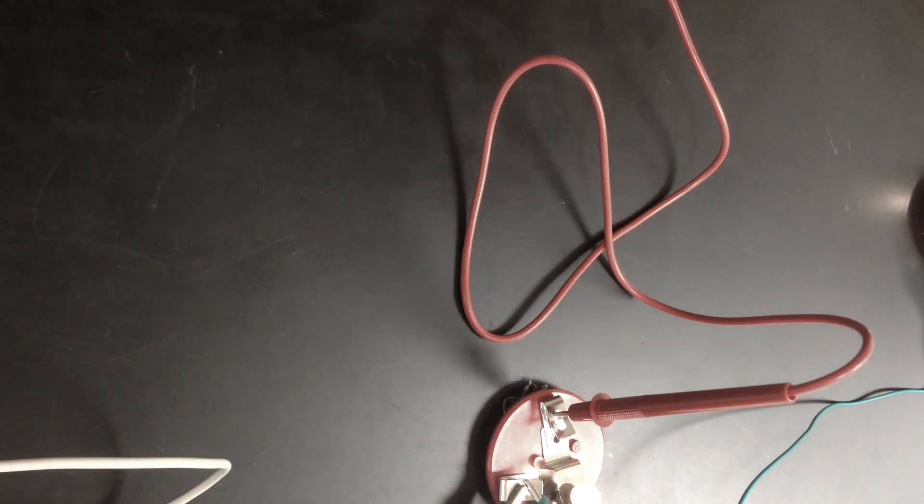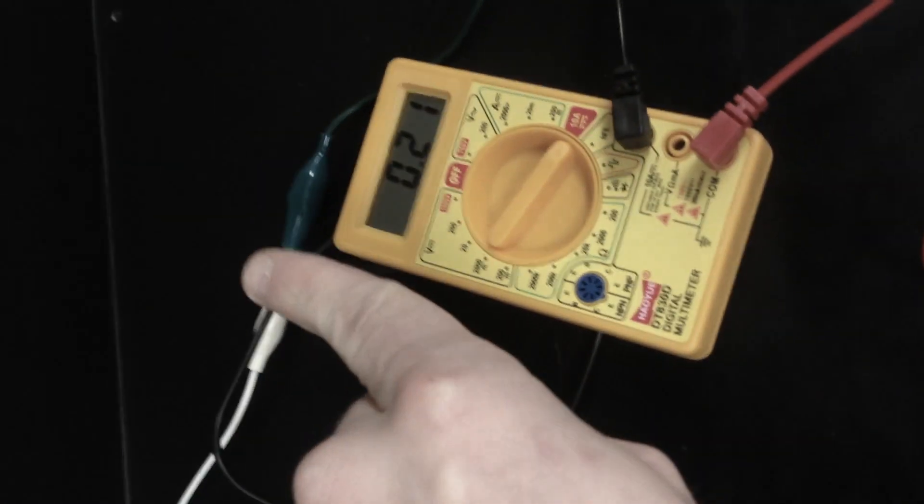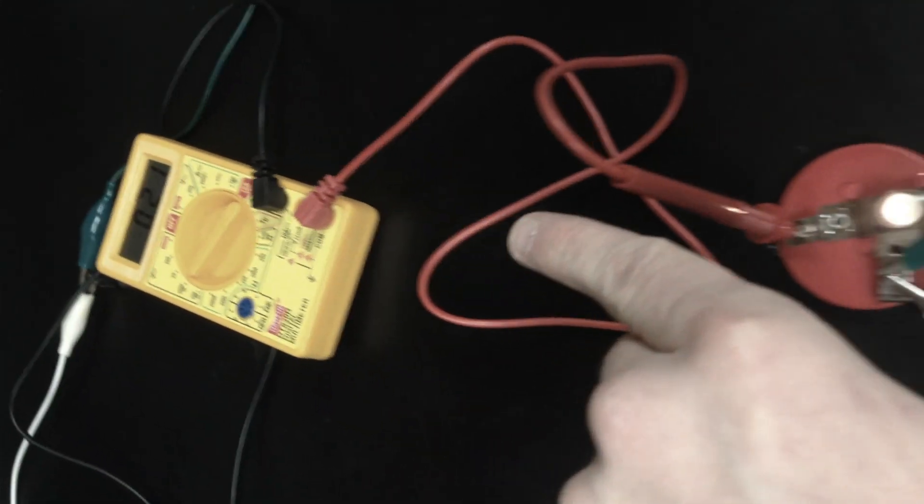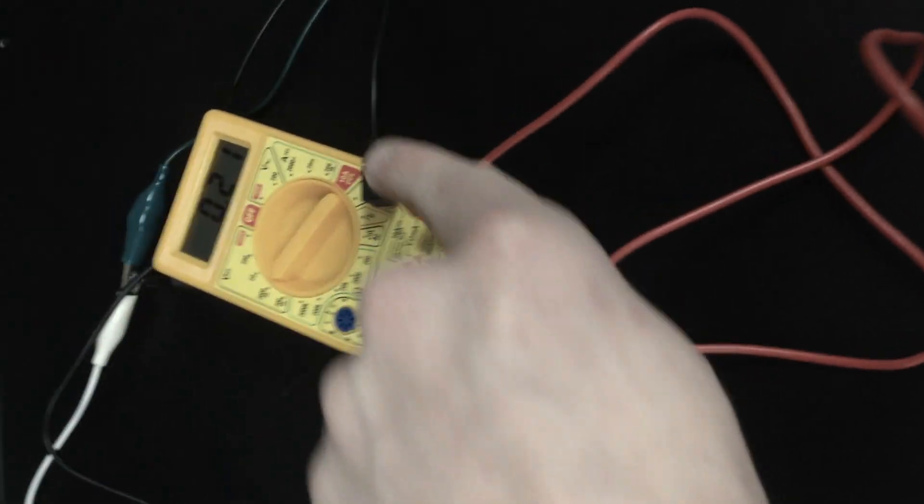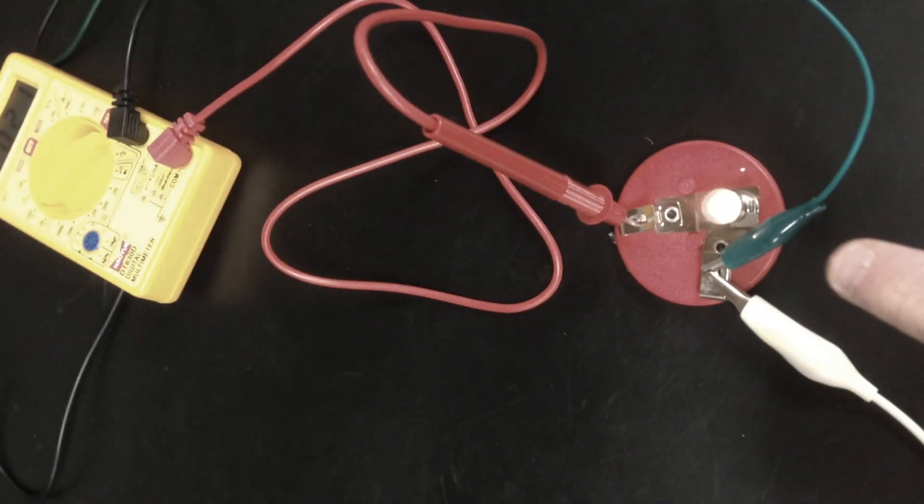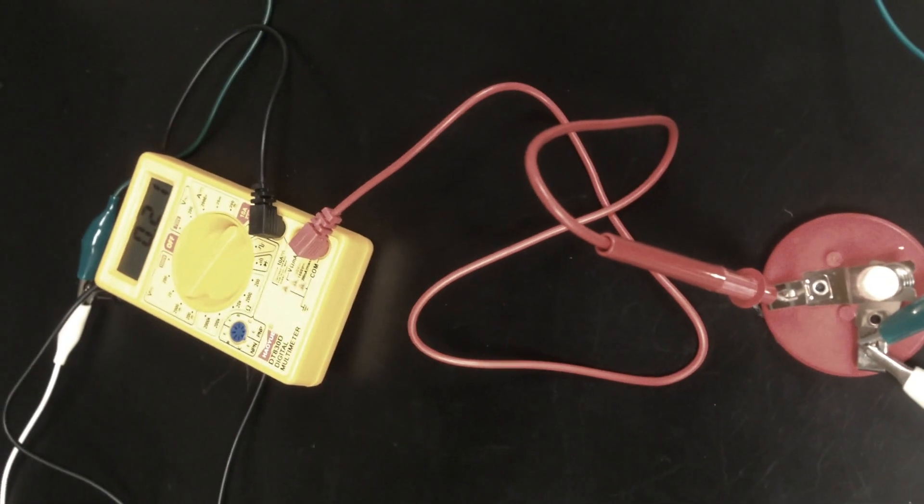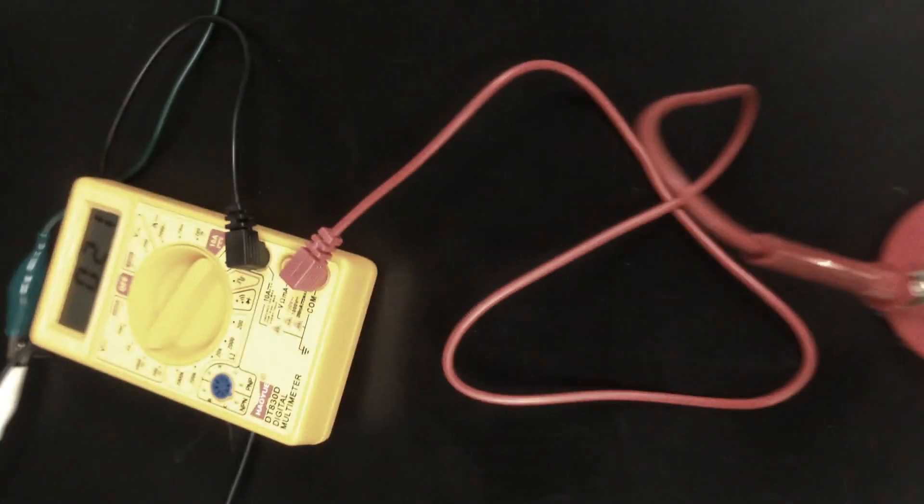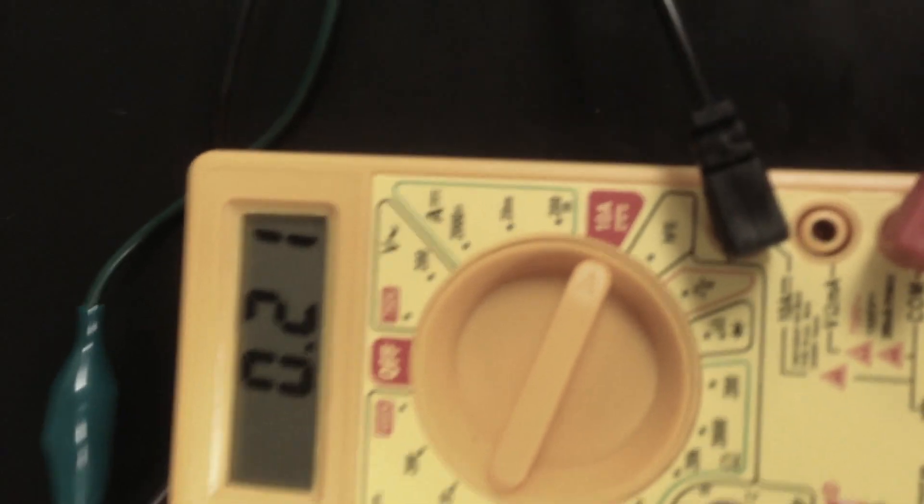Alright, so the multimeter now, you can see the multimeter is part of the branch. We've got the branch starting there. It goes down through the multimeter, through the black cord into the multimeter, through the red cord into the bulb. And the multimeter is part of the branch. And you can see .21 amps is what we're getting when we do that.